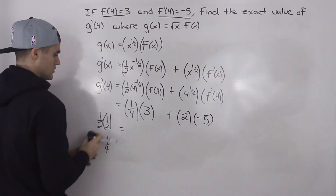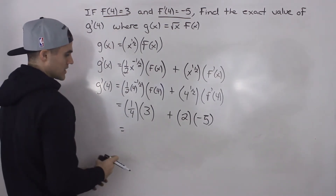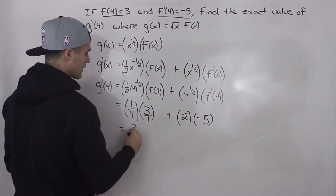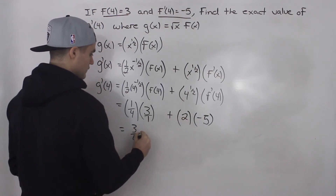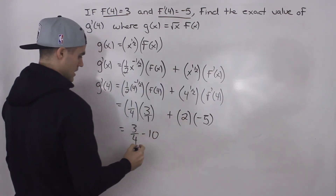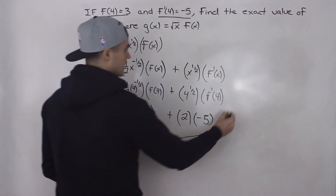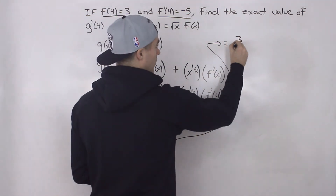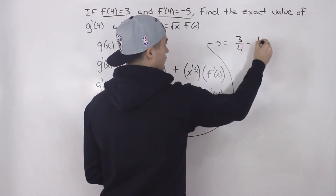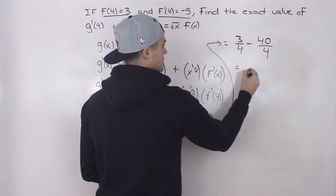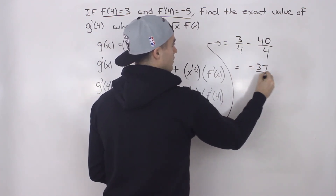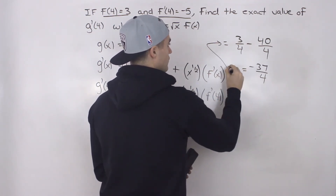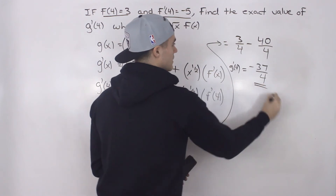Now we can do the algebra. One quarter times 3 is 3 over 4. Two times negative 5 is negative 10. To subtract these we get a common denominator: 3 over 4 minus 40 over 4, which gives us negative 37 over 4. That's our final answer — g'(4) equals negative 37 over 4.